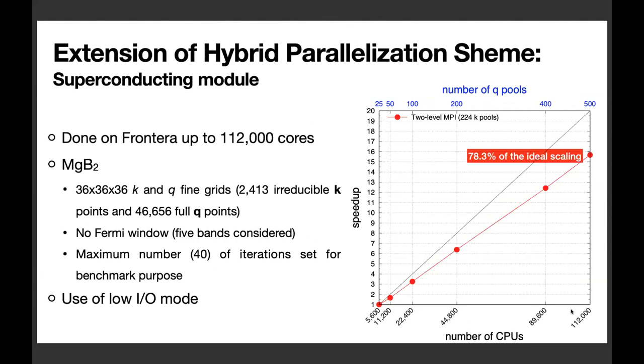Recently, I also extended this hierarchical two-level MPI parallelization scheme to the superconducting module. As you can see, in this case, up to 112,000 cores, we can achieve about 78% of the ideal speedup using the newly introduced low I/O mode.